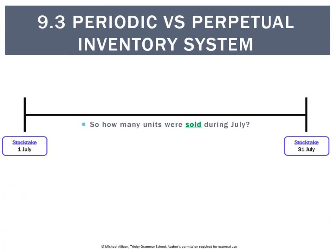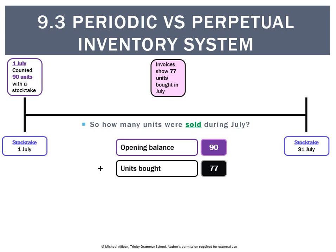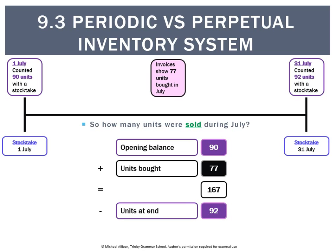To figure out units sold, we do a bit of arithmetic. We take how many there were at the beginning — 90 — add the 77 that we bought, giving a total of 167, then take away the 92 that are left at the end of the period. That means the amount of units sold was 75 units.